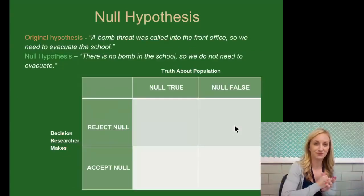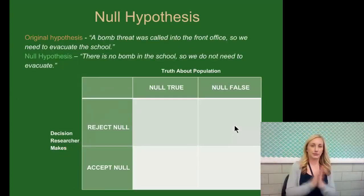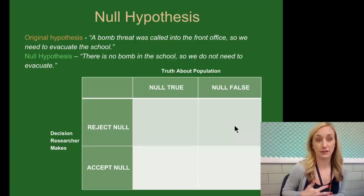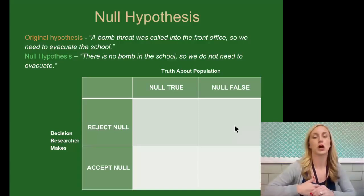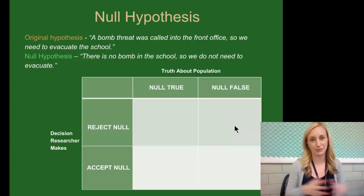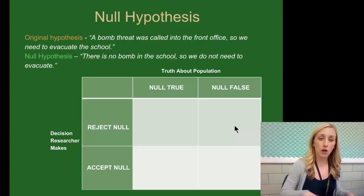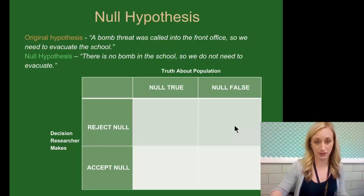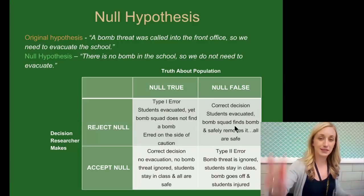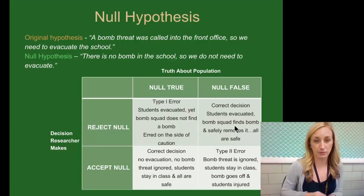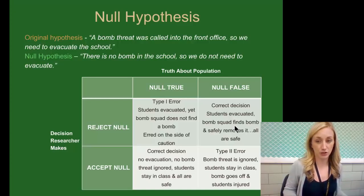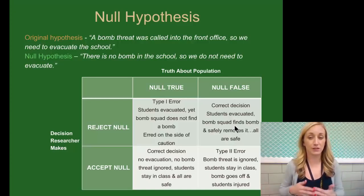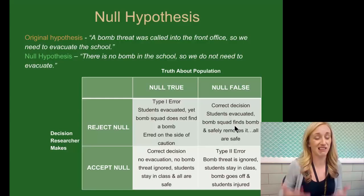For example: the original hypothesis is that a bomb threat was called into the front office, so we need to evacuate the school. The null would be there is no bomb in the school, so we don't need to evacuate. A type 1 error: we evacuated the students, but the bomb squad didn't find anything — we erred on the side of caution. A type 2 error: the bomb threat is ignored, students stay in class, and people are injured. That's not good.